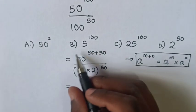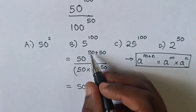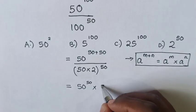So in the numerator, it will be 50^50 times 50^50.